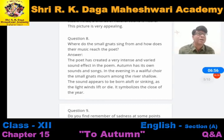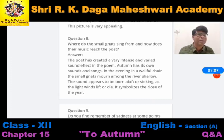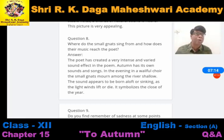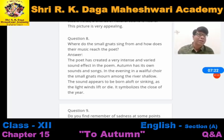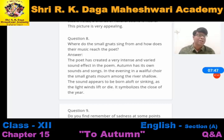Where do the small gnats sing from, and how does their music reach the poet? The poet has created a very intense and varied sound effect in the poem. It appears to be born aloft or sinking as the light winds live or die. The voice of the robin is rich, and the song also appears to be the close of the year — it symbolizes the close of the year.